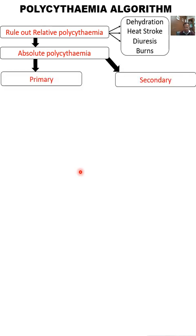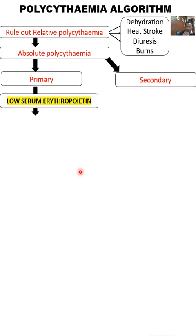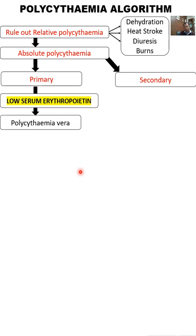Absolute polycythemia can be further divided into primary and secondary. To distinguish between them, check serum erythropoietin levels. Low serum EPO points to primary polycythemia, most likely polycythemia vera — a myeloproliferative neoplasm where, despite low EPO, red cell mass is still increased. High serum EPO points to secondary polycythemia. Polycythemia vera is a true increase in red cell mass with a genetic basis.